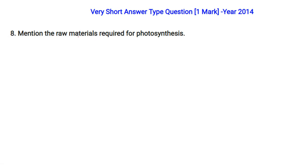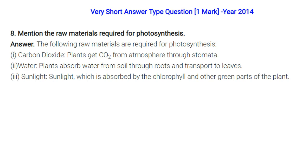Mention the raw materials required for photosynthesis. First, carbon dioxide — plants get CO2 from the atmosphere through stomata. Second, water — plants absorb water from soil through roots and transport it to leaves. Third, sunlight — absorbed by chlorophyll and other parts of the plant.